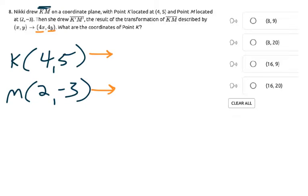What does that mean? Are we adding 4? Are we subtracting 4? Well, we're multiplying by 4. So basically, we're multiplying everything by 4 to come up with the transformation for the new coordinates for both K and M.